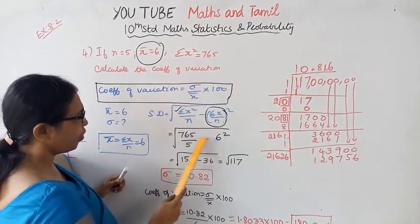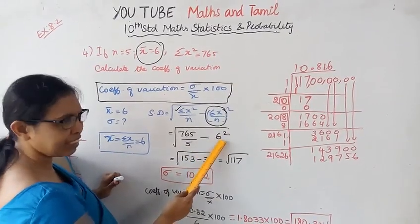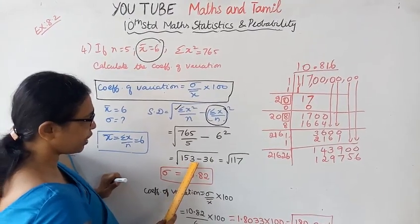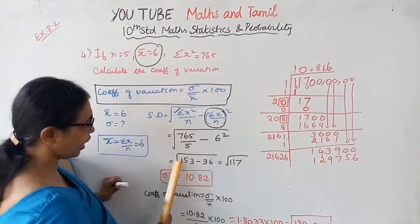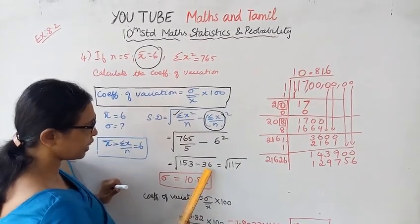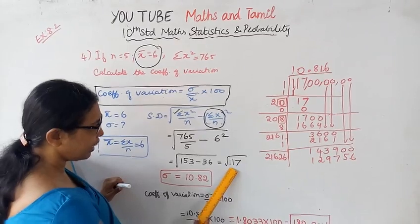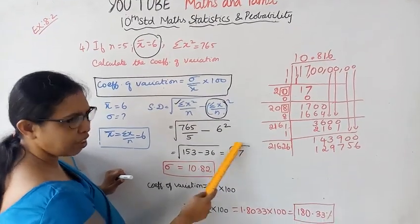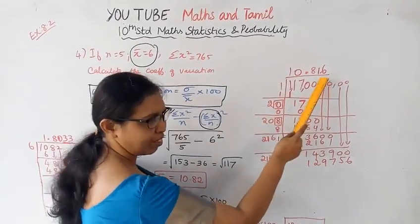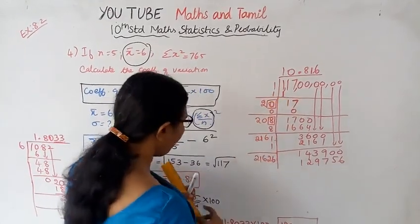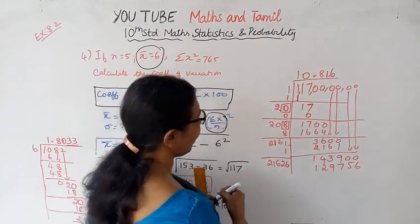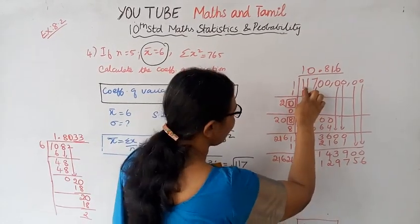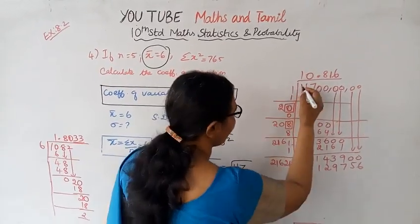So sigma x squared value divided by n=5, minus x-bar squared: 765 divided by 5 minus 6 squared. 765 divided by 5 is 153, minus 6 squared which is 36. The square root of 153 minus 36 equals the square root of 117.